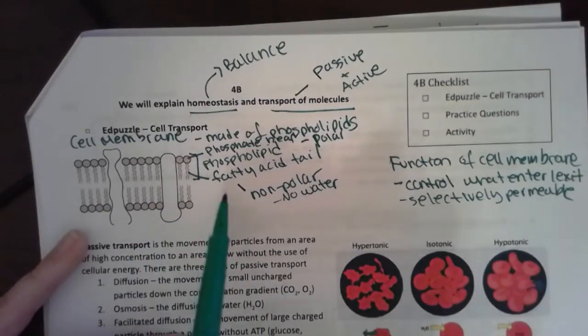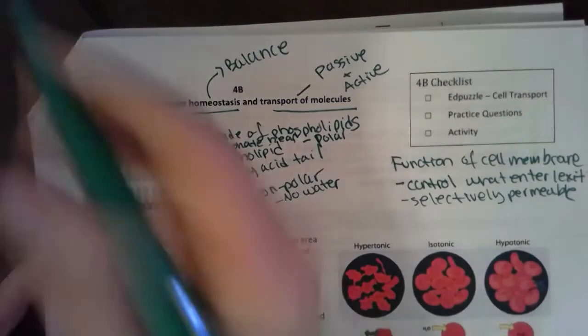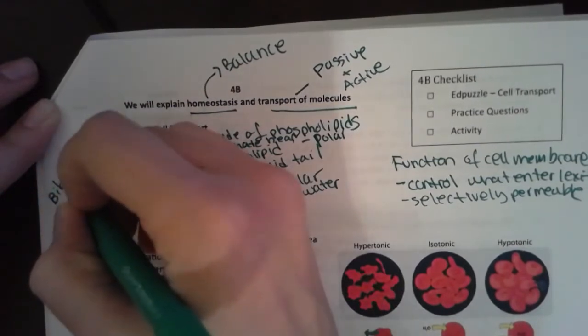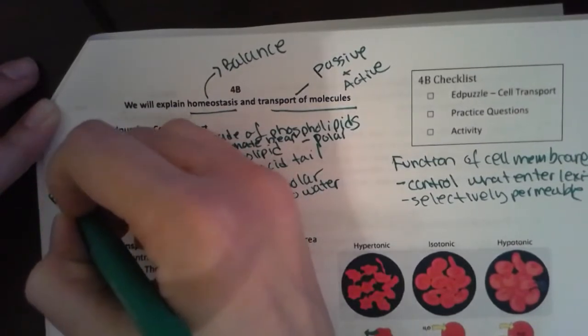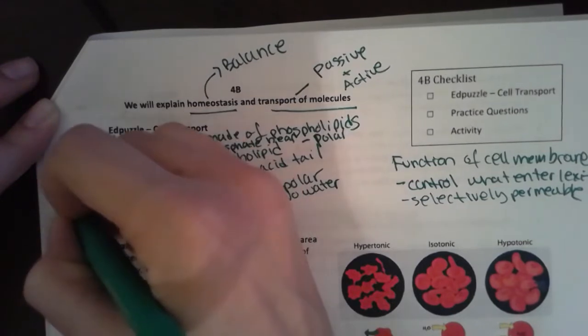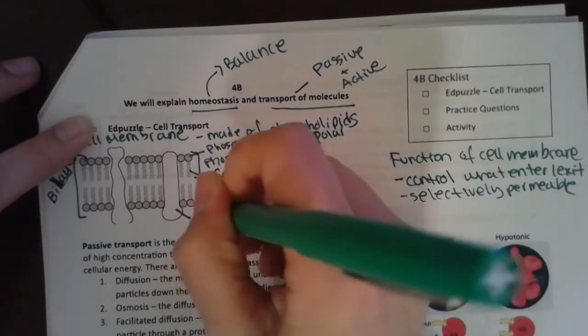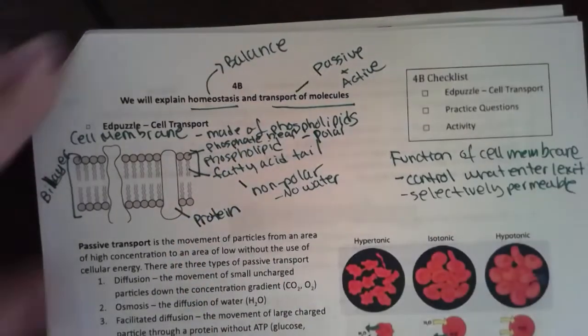Basic components: we have a phospholipid, there are two layers, that's why we call it a phospholipid bilayer. And then these things right in here are just proteins that sometimes help us out.